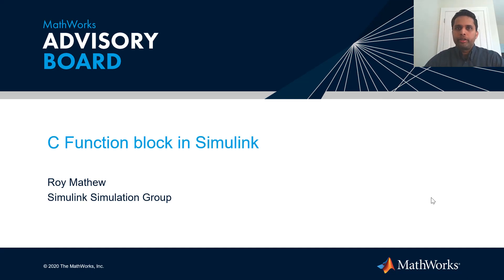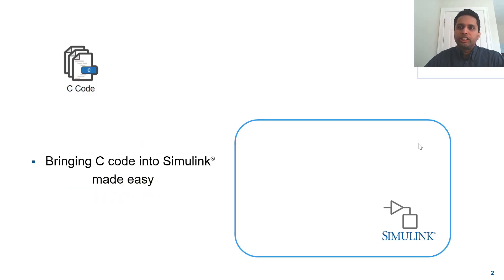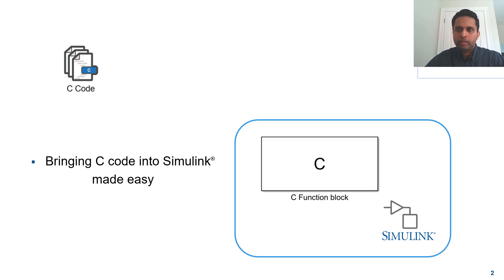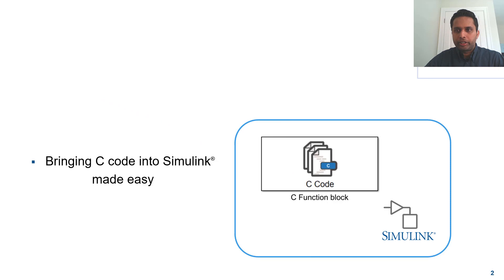Hello, I'm Roy Matthew and I'm a software developer at the MathWorks. In this video, I will introduce the C function block and how you can use it to integrate external code into Simulink. The C function block allows you to bring external code into your Simulink model and add any additional C interface code directly inside the block. This block will seamlessly translate signals from the Simulink context into the C code that you want to write.